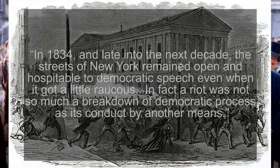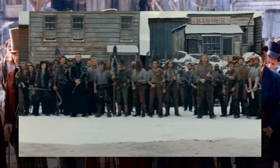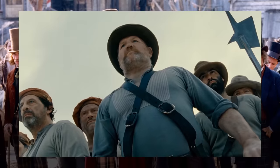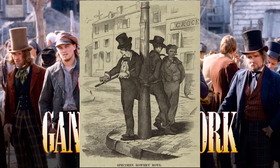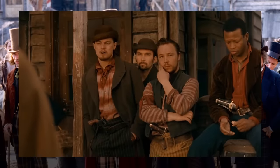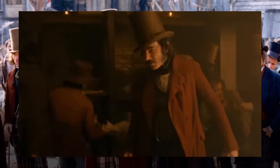As Ryan wrote: 'In 1834 and late into the next decade, the streets of New York remained open and hospitable to democratic speech, even when it got a little raucous. In fact, a riot was not so much a breakdown of democratic process as its conduct by another means.' The Irish and nativist gangs of the film — the Bowery Boys, the Plug Uglies, the Dead Rabbits, the Atlantic Guard, and so on — were from the Asbury book and were true to history. Historian Tyler Anbender points out that many of these gangs weren't just thieves, robbers, pickpockets, or gamblers, but rather political gangs meant to carve out a niche for their people or their beliefs.